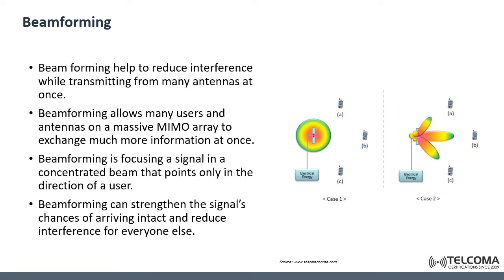In the second case, on the right, the signal strength of the radiation pattern — shaped like a beam — is formed in a way that radiates energy in the direction of the user equipment only. In the direction of the user equipment, a much stronger energy beam is focused and directed to the user, compared to other directions not pointing toward the user equipment.